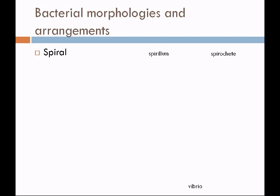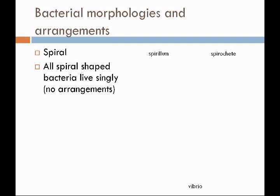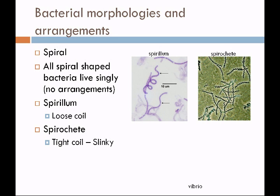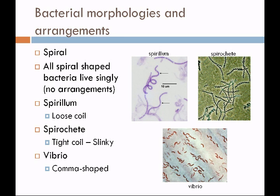The third shape of clinical importance is the spiral shape. All spiral-shaped bacteria live singly, so we won't find any arrangements. The first is the spirillum, which is a loose coil. Second is the spirochete, which is a tight coil, very much like a slinky. And the last is a comma-shaped bacterium, which we call Vibrio.